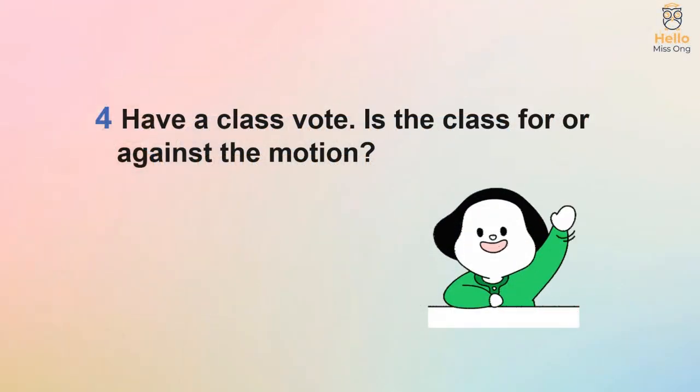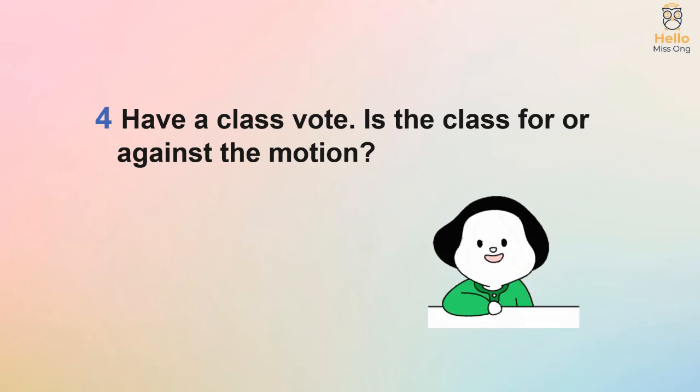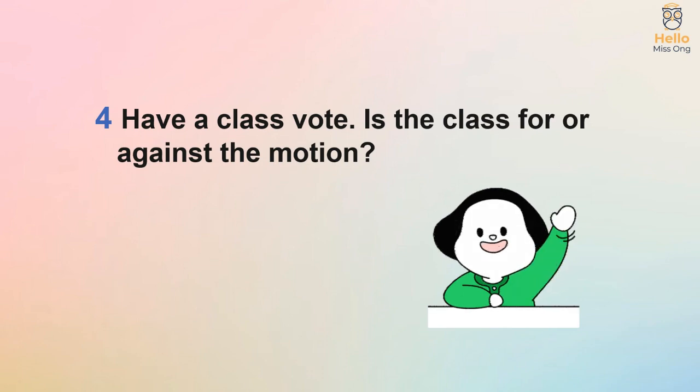Activity 4: Have a class vote — is the class for or against the motion?